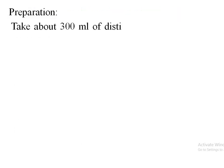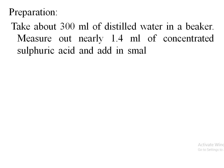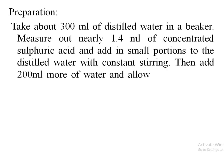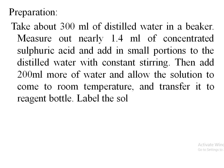Preparation: take about 300 ml of distilled water in a beaker and measure out nearly 1.4 ml of concentrated sulfuric acid. Add it in small portions to the distilled water with constant stirring, then add 200 ml more water and allow the solution to come to room temperature. Transfer it to the reagent bottle and label the solution.